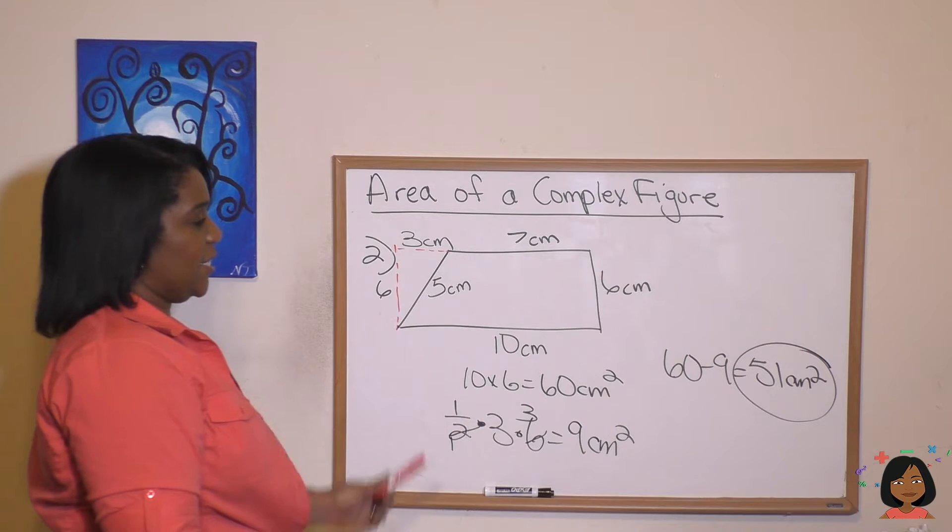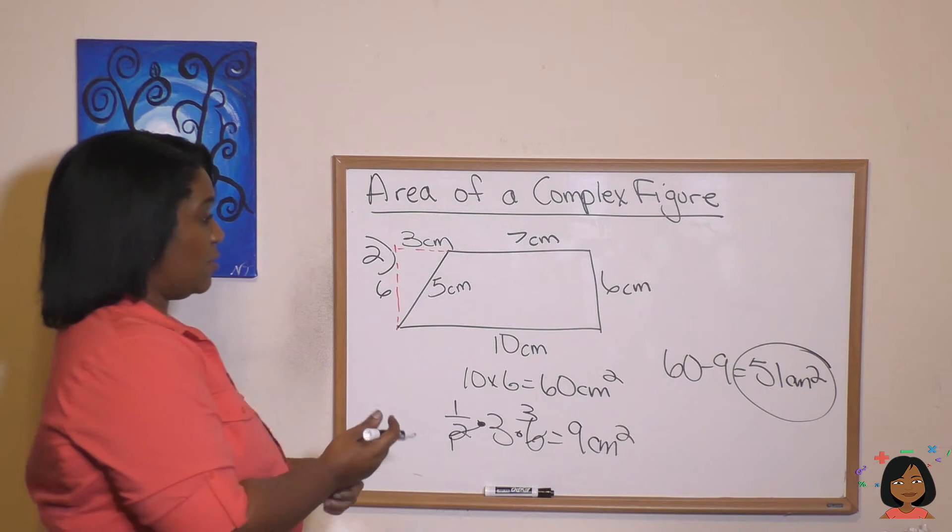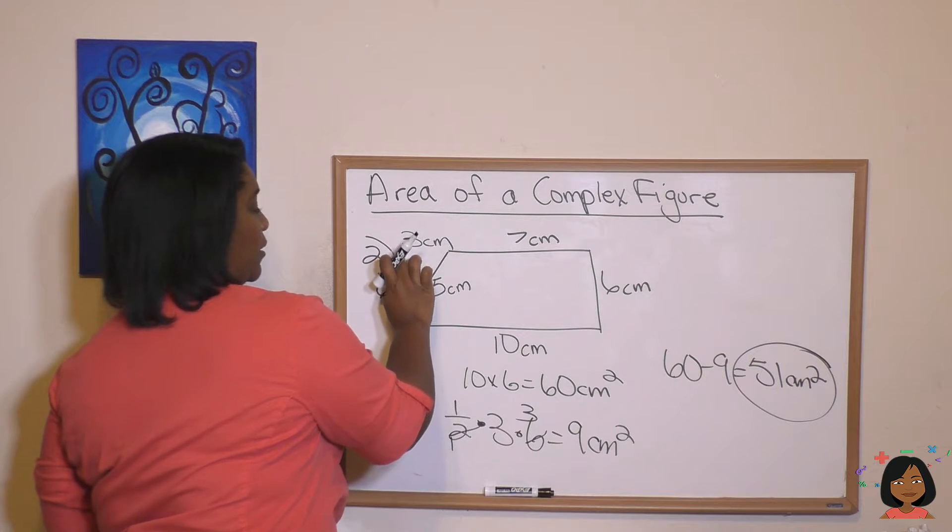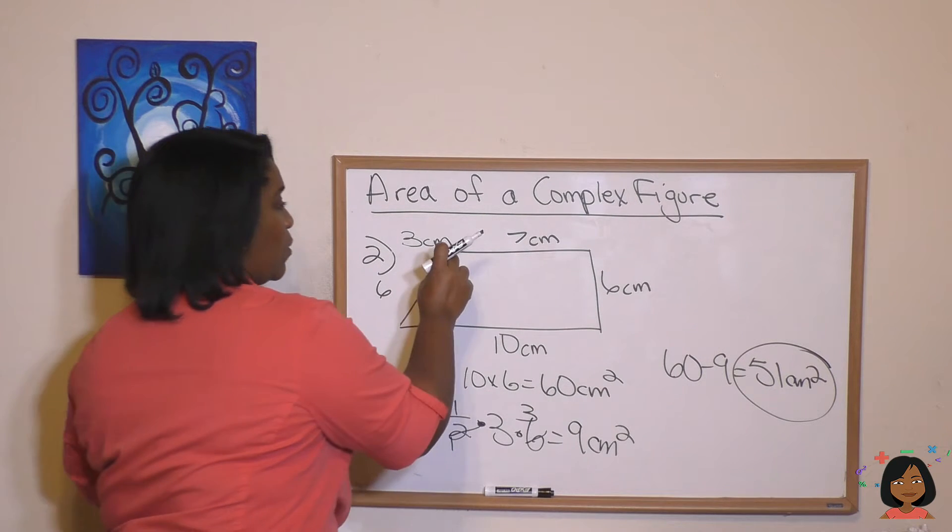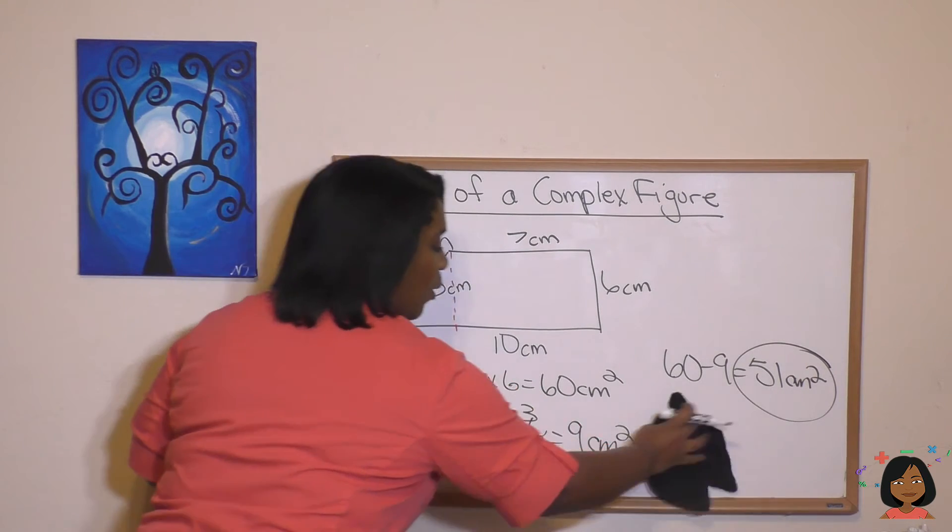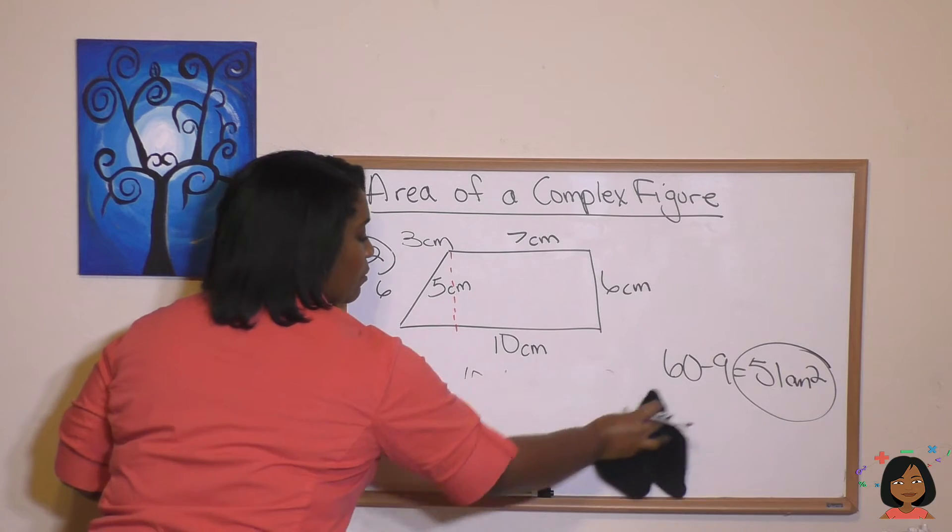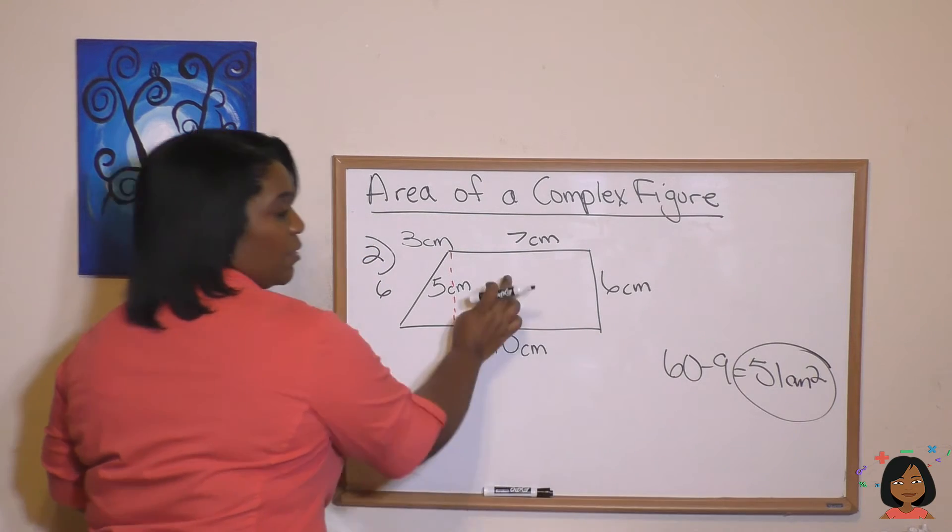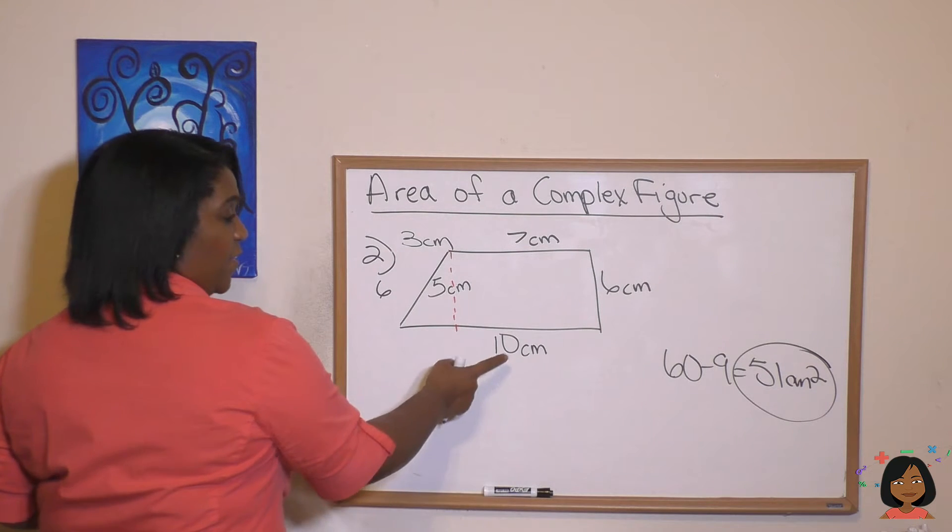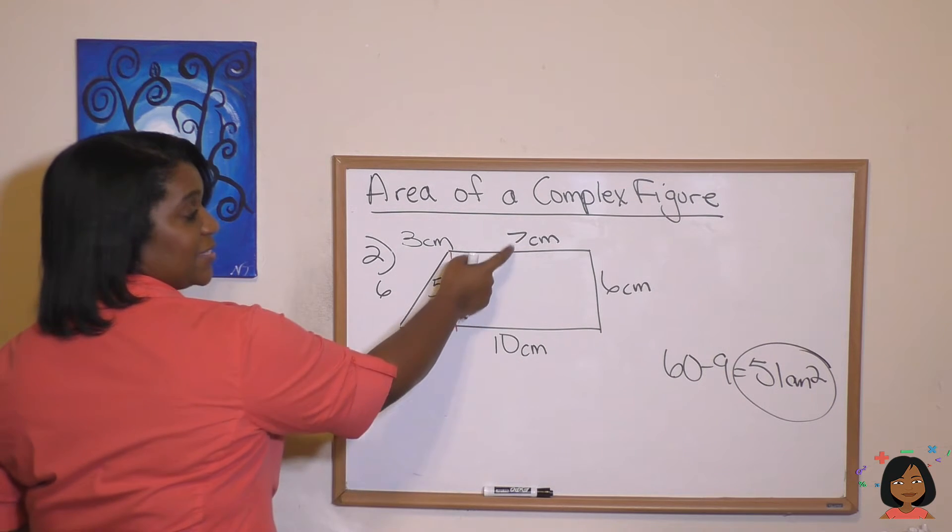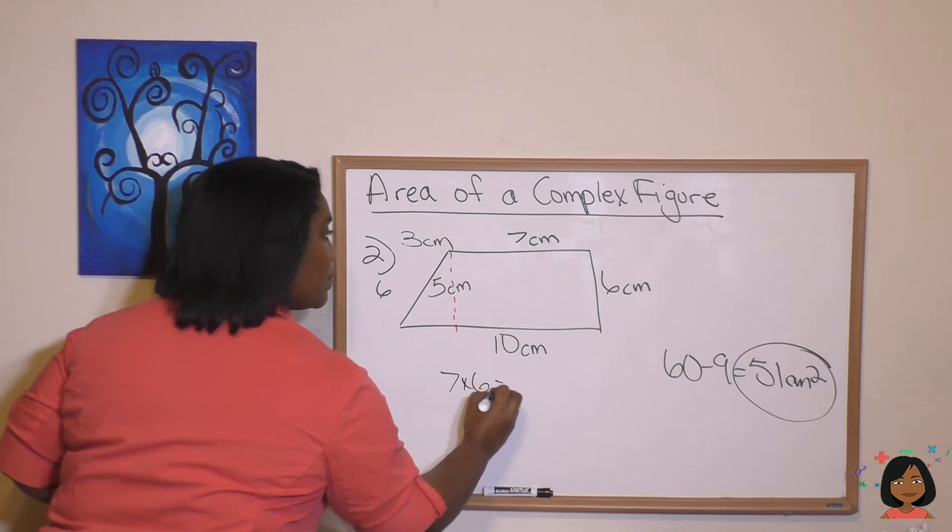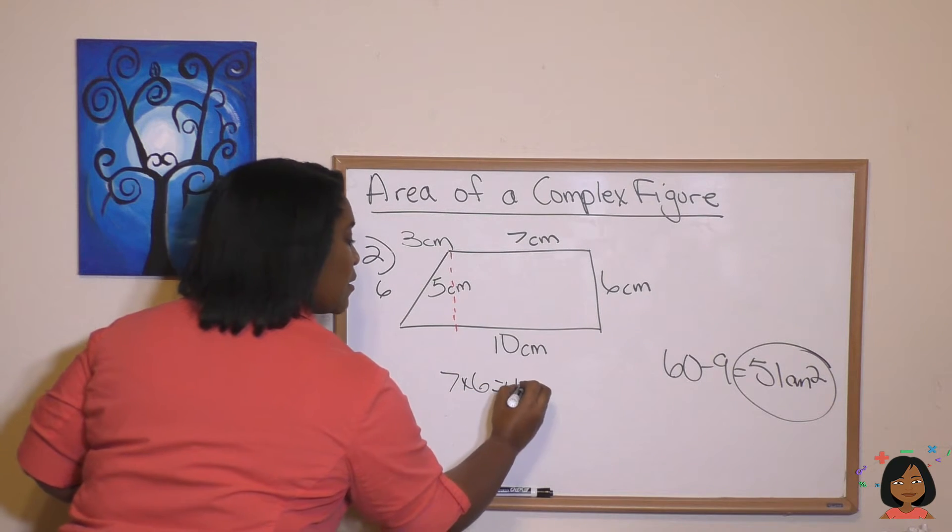What if we did cut this down into a smaller triangle? So this time I'm going to get rid of this little triangle here. And I'm going to draw in one here. Okay, I'm going to erase this now because we know our answer is 51. Let's do this rectangle and this triangle and add them together. This is no longer 10. It's a 7. 7 times 6 is 42 centimeters squared.